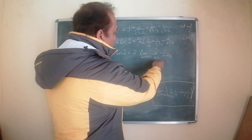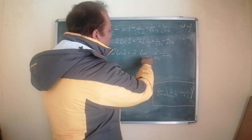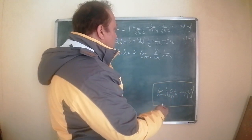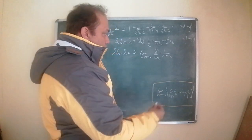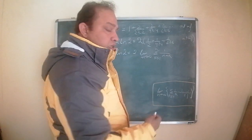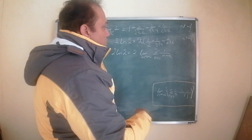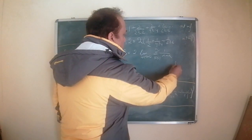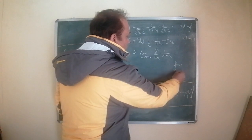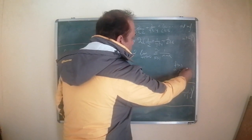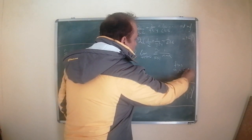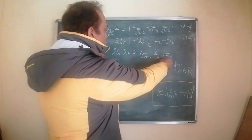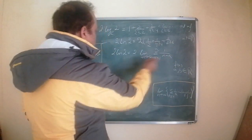Now I have a term in the sum which is dependent upon the index and the limiting variable, so I can always regard this as a Riemann sum, and further convert that sum into a definite integral of some particular function f(x) defined over an interval [a, b], where a and b are real numbers.